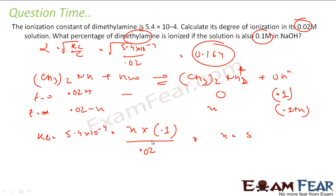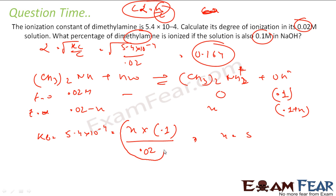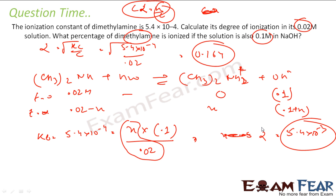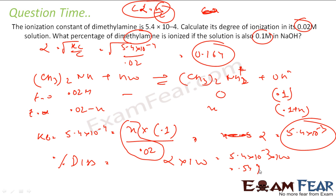Approximating 0.1+x ≈ 0.1 and 0.02−x ≈ 0.02, and noting that c·alpha = x so alpha = x/c. From the expression: alpha = Kb / 0.1 = 5.4×10⁻⁴ / 0.1 = 5.4×10⁻³. This is the new degree of ionization. For percentage dissociation: alpha × 100 = 5.4×10⁻³ × 100 = 0.54%, approximately 1.54%.